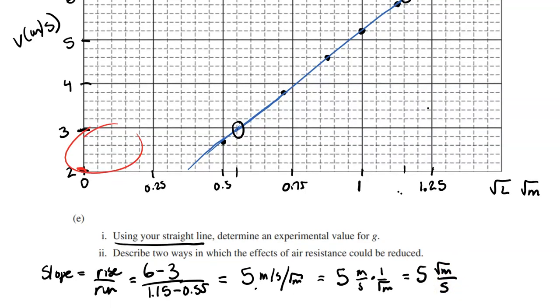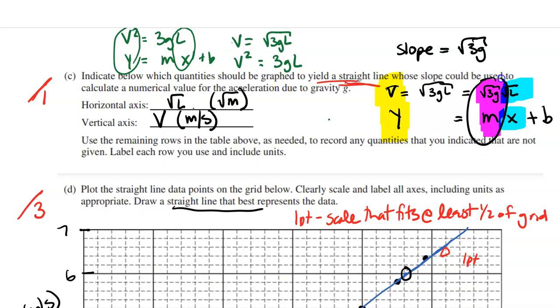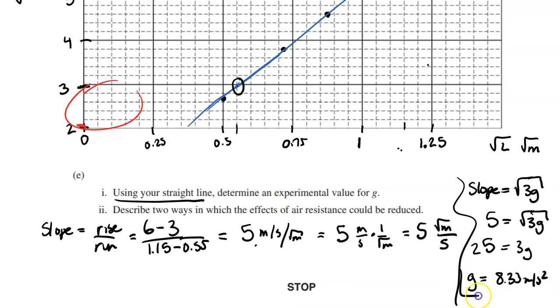So, now we want to use that slope to find an experimental value for G. Let's go back to what we said earlier. Earlier, we said, based on this, that the slope is equal to square root of 3G. So, let's go ahead and put that in. So, slope equals square root of 3G. So, the slope is 5, and that equals square root of 3G. So, let's see. I'm going to square both sides. So, that's going to be 25 equals 3G. Do some fun math. Divide both sides by 3. And I get G to be 8.33 meters per second squared. Cool. That's fun.